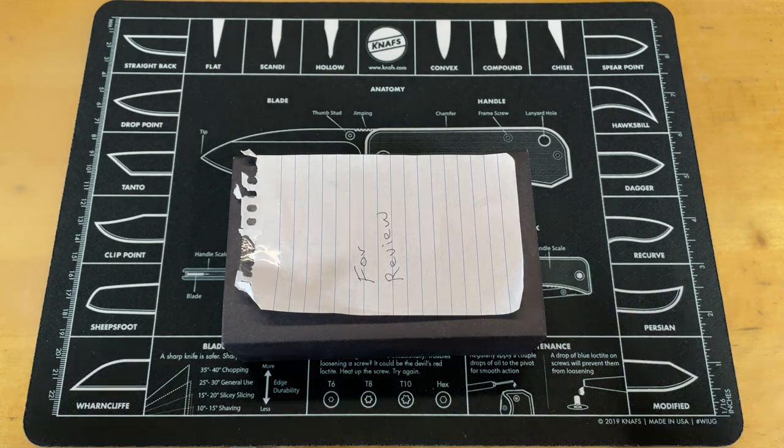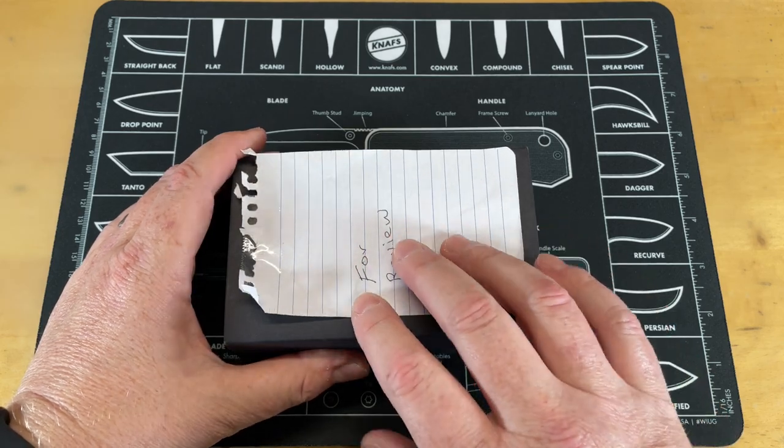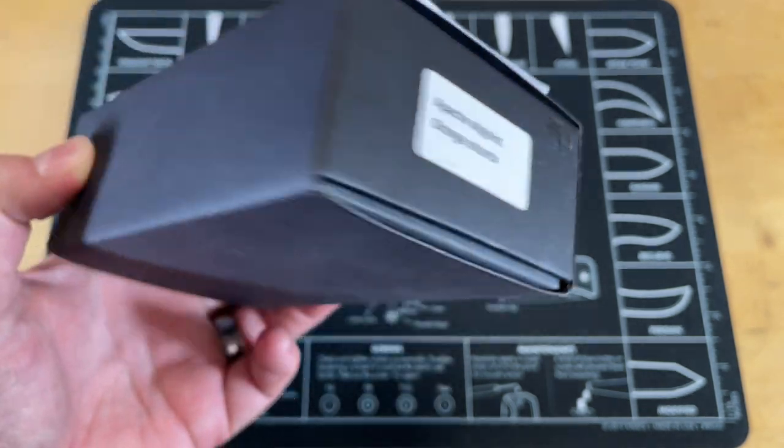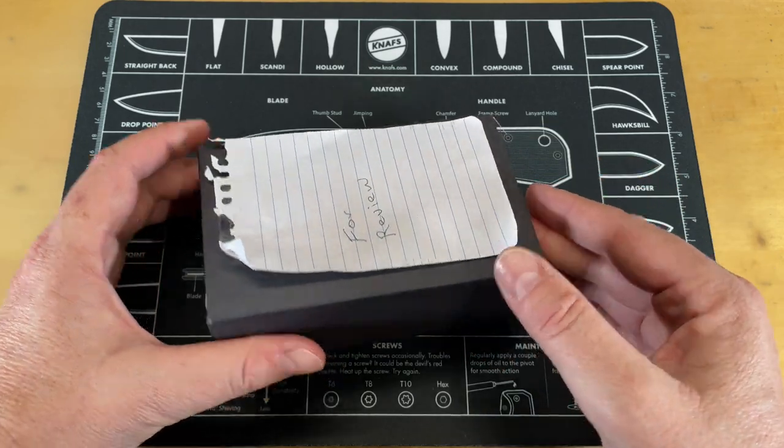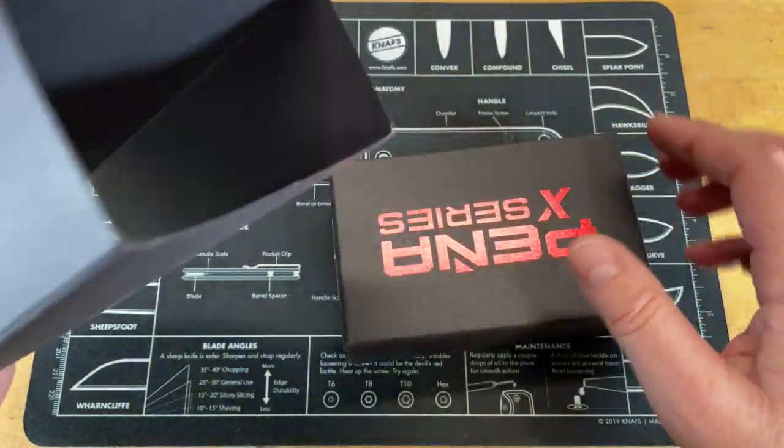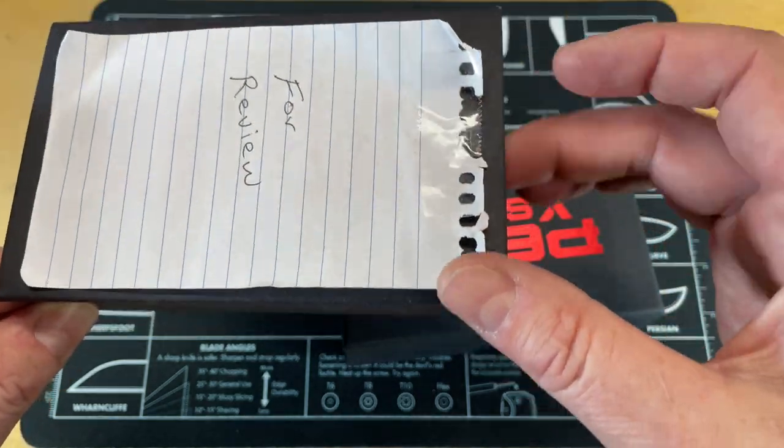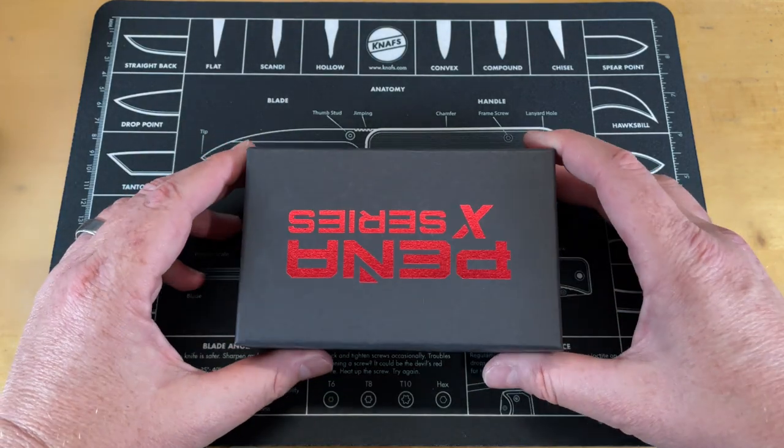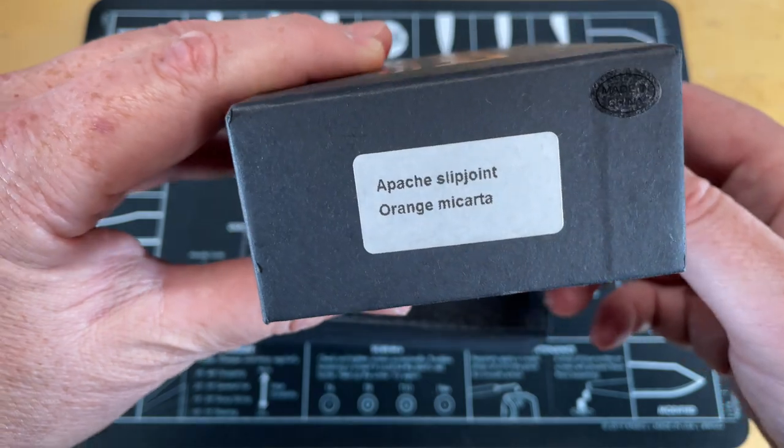I want to get this started because if this is the size I think it is, it's a small slip joint I can put in my fifth pocket and carry it in my watch pocket and have an extra knife. Let's open this up. I want to look at the packaging. This packaging is nice, you got a nice little plastic slip. I'm not going to tear this off because I'm afraid the tape is going to tear the cardboard. This is Peña X series Apache slip joint in orange micarta.